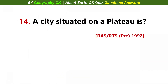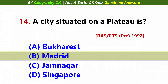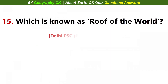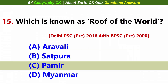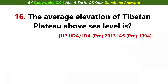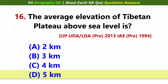A city situated on a plateau is... Answer B: Madrid. Which is known as the roof of the world? Answer C: Pamir. The average elevation of the Tibetan Plateau above sea level is... Answer D: 5 km.